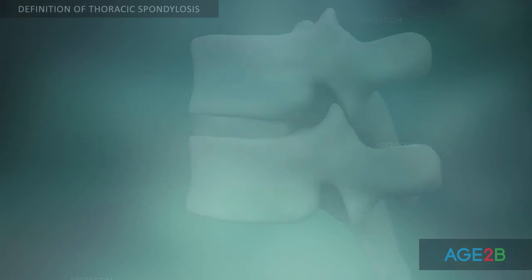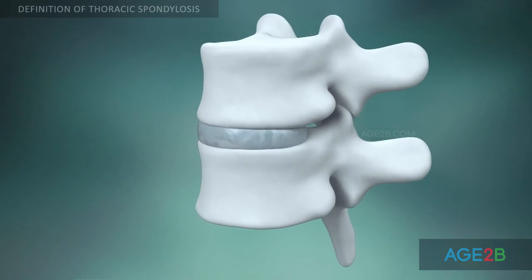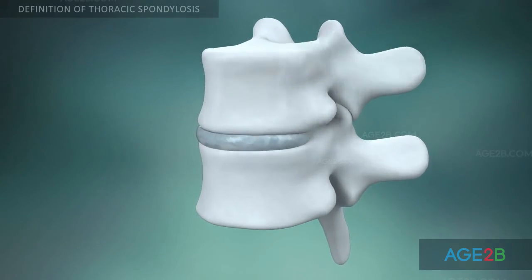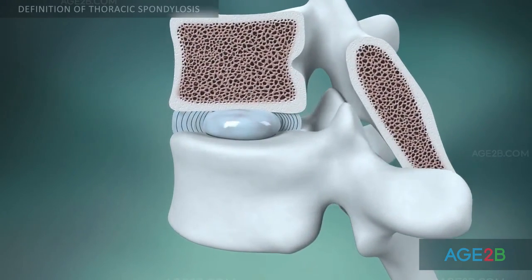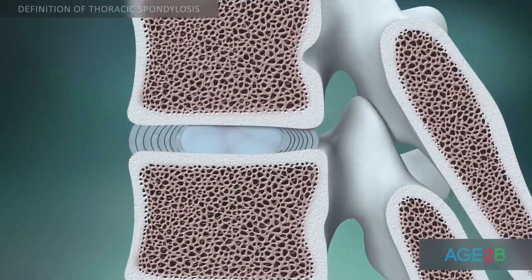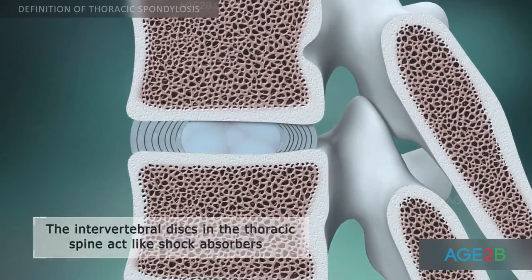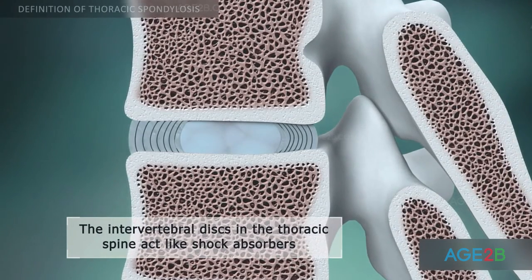The intervertebral discs between the vertebrae in the thoracic region of the spine are not as thick as those found in other spinal regions, but they act as shock absorbers.